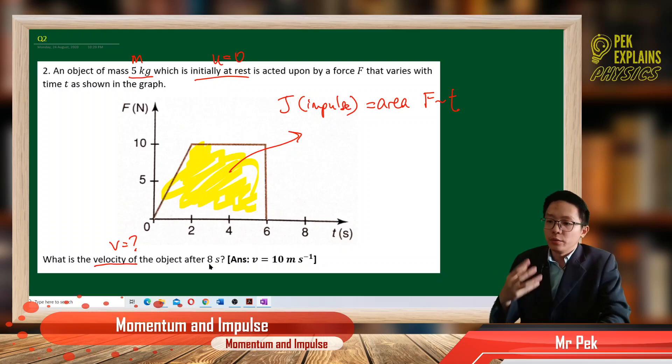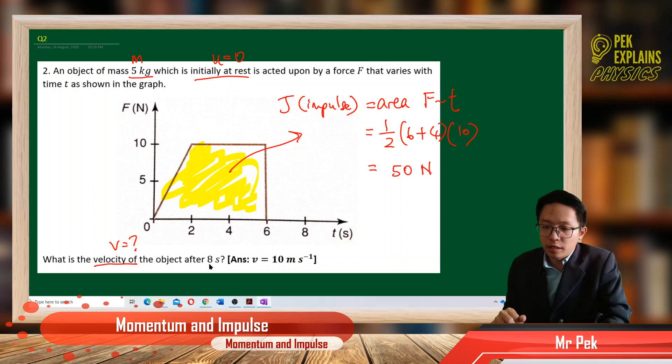So area under the graph, we can find the impulse. Let us find the area under the graph. This is a trapezium. So formula for trapezium: half times 6 plus 4 times the height which is 10. And so this gives us 50 Newton seconds.